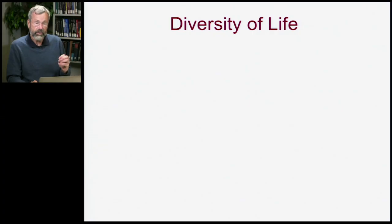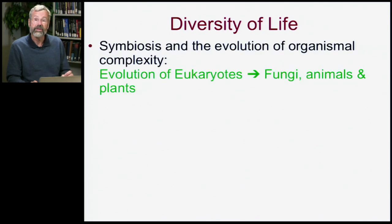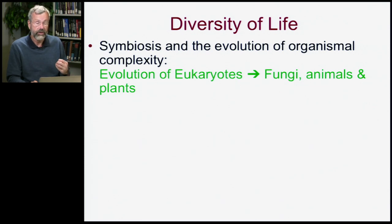Today we begin a sequence of talks about the diversity of life. These will be divided into separate topics. First, symbiosis and the evolution of organismal complexity, where we'll look at the evolution of the eukaryotes and how these gave rise to the fungi, the animals, and plants.